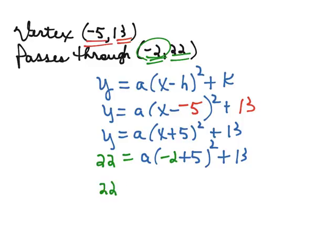So 22 is equal to negative 2 plus 5 is 3. 3 squared is 9. So that would be 9a plus 13. Subtract 13 from both sides and we get 9 equals 9a, and that means that a is 1.